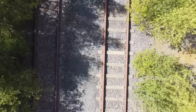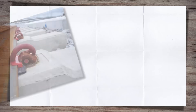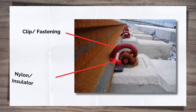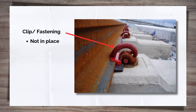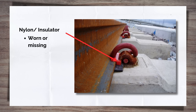Let's start at the top and move down. Clips are fastenings, and the nylons or insulators inserted between them and the rail are first up. The clips may not be in, therefore not holding the rail, which allows the rail to move. It could be that the nylon sitting between the base plate and the rail is worn or not there. This can give that few extra millimetres that is the final straw and result in the gauge getting too wide.